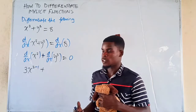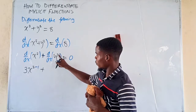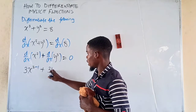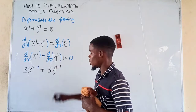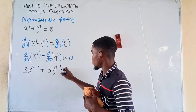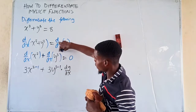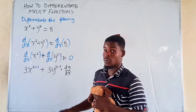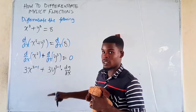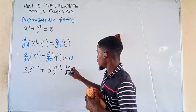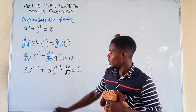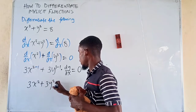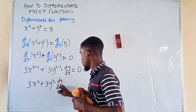When you differentiate y raised to some power, you bring the power to the front — that will be 3 — put down the y, then subtract 1 from it, just by applying the power rule. And then you multiply it with dy/dx. You differentiate the outside function, which is the power 3: you put 3y to the power 3 minus 1, and then multiply it with dy/dx, because y is a function of x. So here we have y to the power 3, which is a power function, and y itself is a function of x. So we now have 3x squared plus 3y squared multiplied by dy/dx, and we equate this to 0.